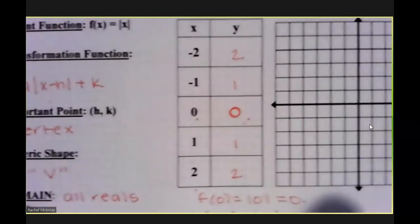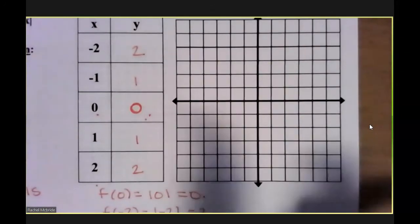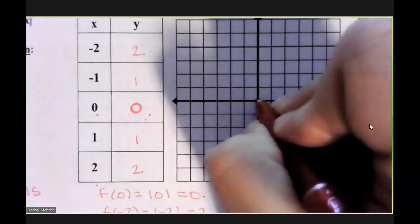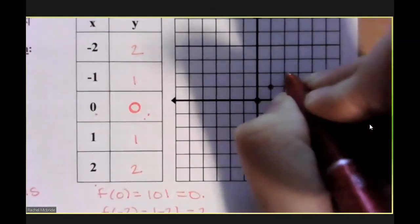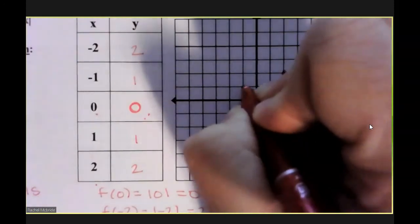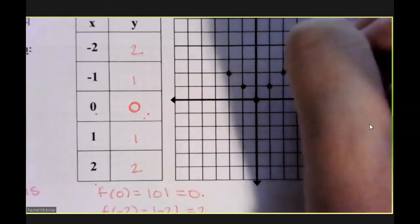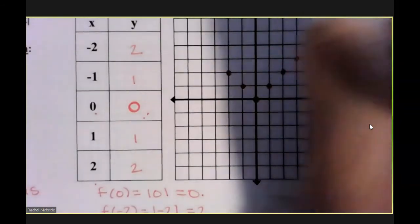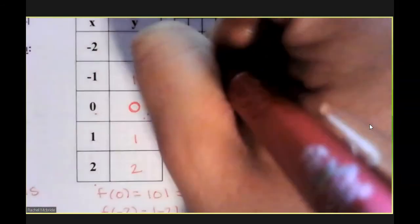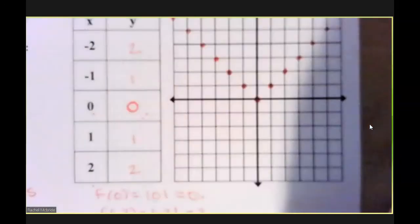When graphing an absolute value, it's always helpful to have those five key points. So you have 0, 0, 1, 1, 2, 2, negative 1, 1, negative 2, 2. The a value is 1, which means that graph has a slope of 1 in opposite directions.